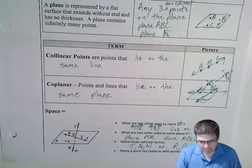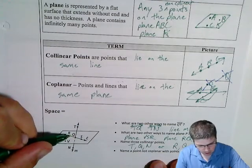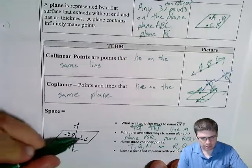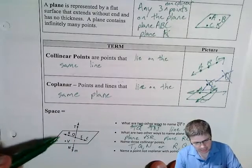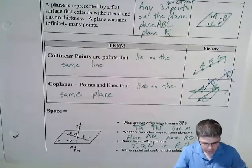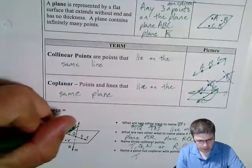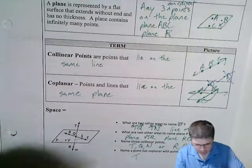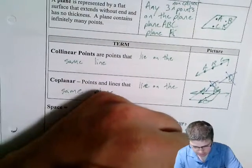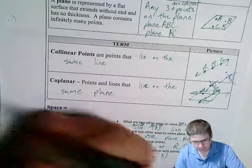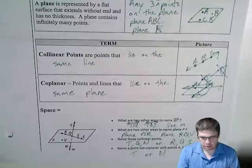And name a point not coplanar with R, S, and V. So R, S, V. Okay, they're talking about plane P. So they want a point that's not on this flat surface. And so the two that are drawn here, you could pick T or N. T up here, up higher up on that line, and N down below. T or N, I guess I'll say it that way. So those are some answers to those questions, those types of ideas.